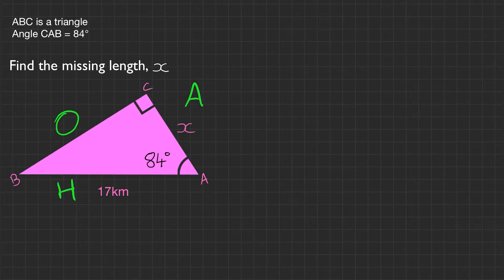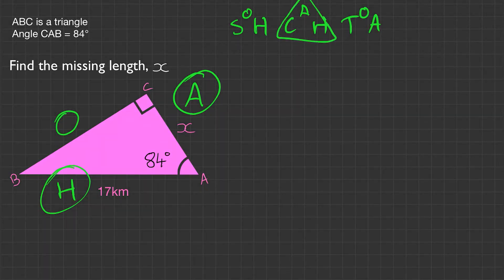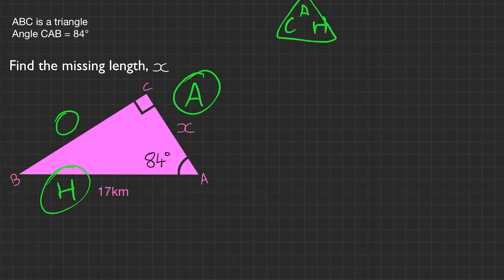Our second step is let's write down SOH CAH TOA. Again, I'm writing it up and down. This is to make it easier when writing the equations. We need to know which of those three sets we want to use. We need to find the adjacent and we have information on the hypotenuse. So A and H is cos, so we'll be using CAH.